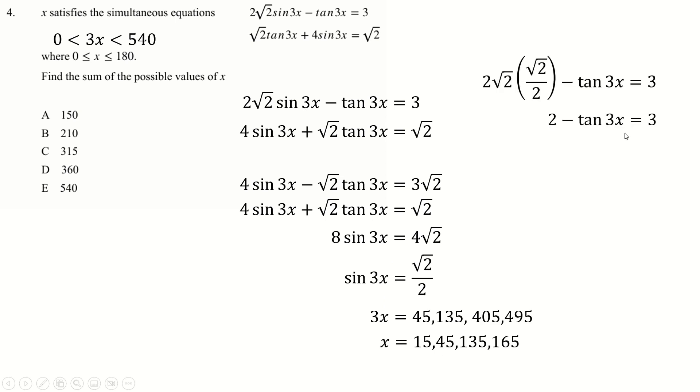We're going all the way up to 540, because we've got a 3x here. So let's just add 360 to get the other solutions. But we can't just add all of those together, because we also need to check that this works for tan 3x. So substitute sin 3x as root 2 over 2. Then we solve for tan 3x equals minus 1. Tan is minus 1 at 135, then add multiples of 180. We need to look for which solutions coincide. x is 45 and x is 165 align for both, so we add them to get 210.